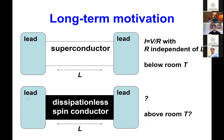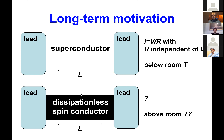Part of the field of spintronics would like to replace a charge-based setup with a similar one using metallic leads as electronic reservoirs, but with something in between that is a dissipation-free spin conductor — a spin superfluid, for example. The goal is to find a material with nearly dissipationless conduction of spin, and this might actually work above room temperature because the dominant energy scale is the exchange interaction, which is large.